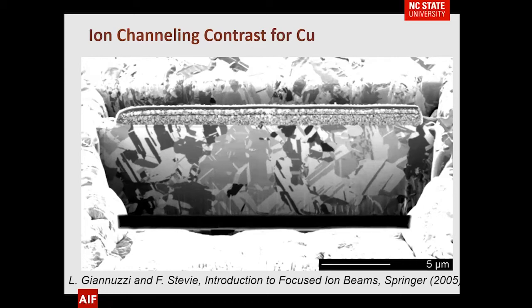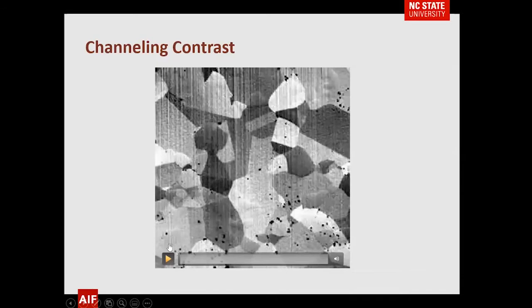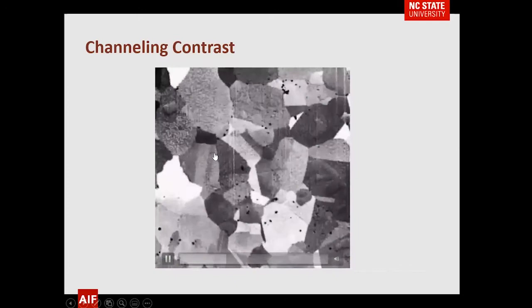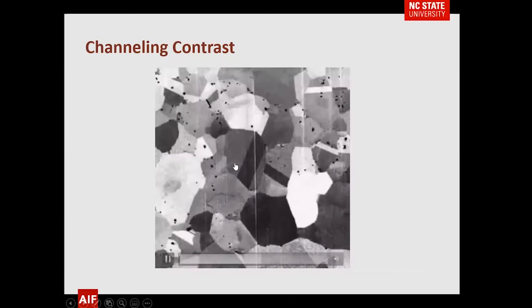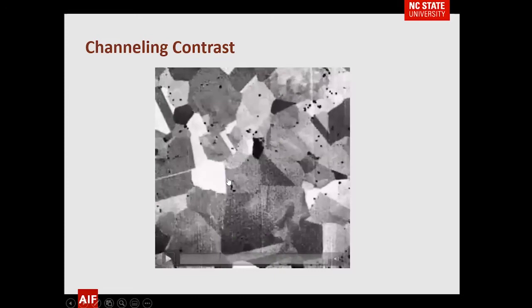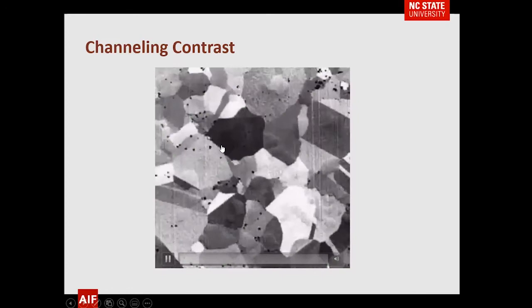I have a short video to show. This is a channeling contrast video where we go through a material as a function of time by sputtering. As you look, you can see various grains appear and then disappear. You can look at the edges and tell whether defects — these black dots — are showing up at grain boundaries or not. You can see twinning and all kinds of features just by sputtering through the material.